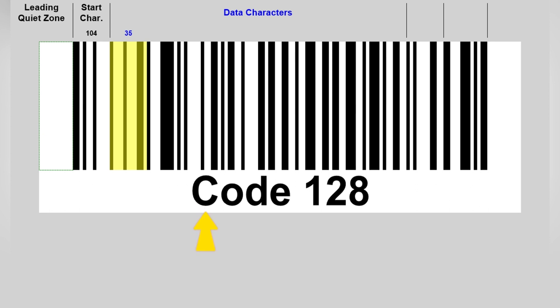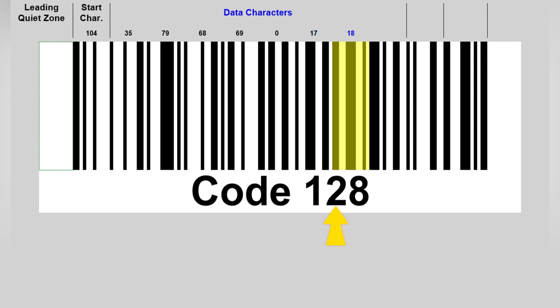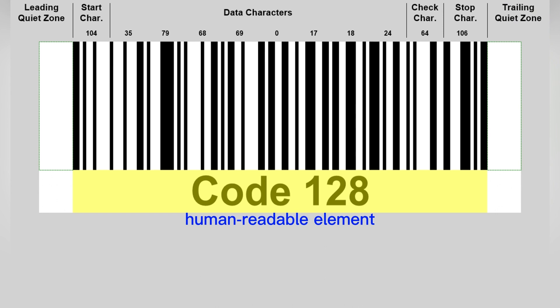In this sample barcode, symbol character value 35 represents ASCII C. In code set B, value 79 represents O, value 68 represents D, value 69 represents E, value 0 represents the ASCII space, value 17 represents number 1, value 18 represents number 2, and symbol character value 24 represents ASCII 8. The fourth part is a symbol check character with symbol character value 64, calculated from a weighted sum of all the characters. The stop character has symbol character value 106, followed by the trailing quiet zone. An optional human-readable element displaying the barcode data should normally be printed below the barcode symbol.